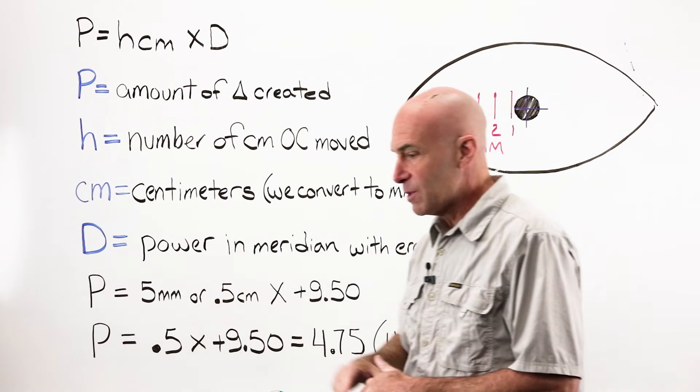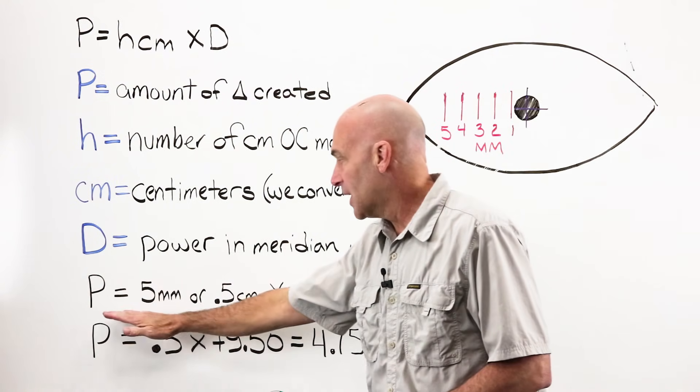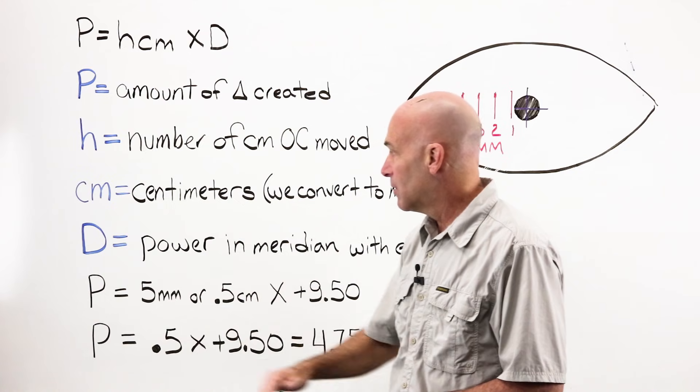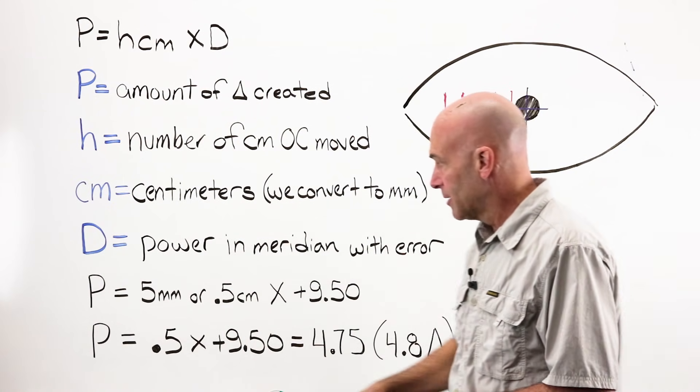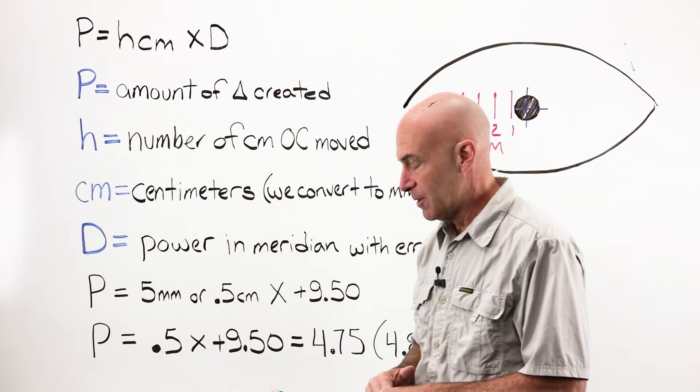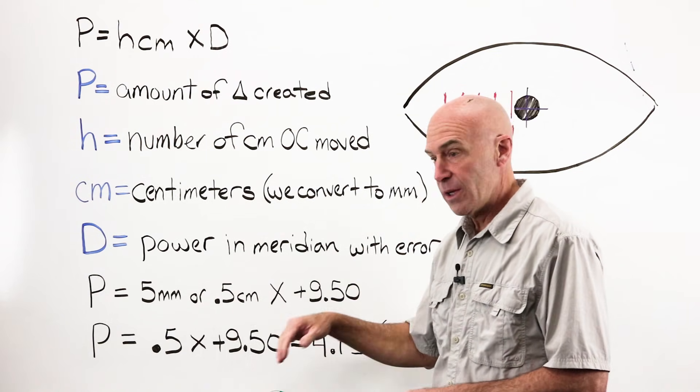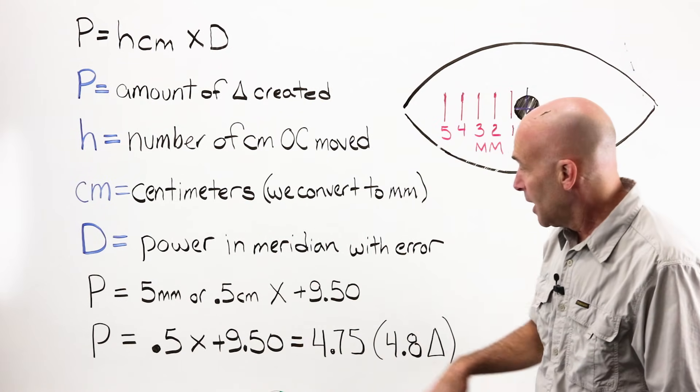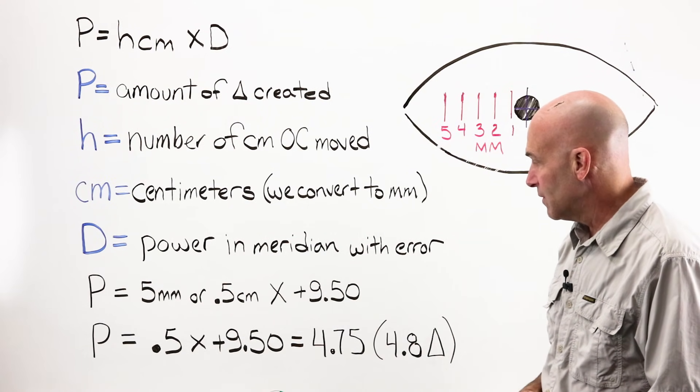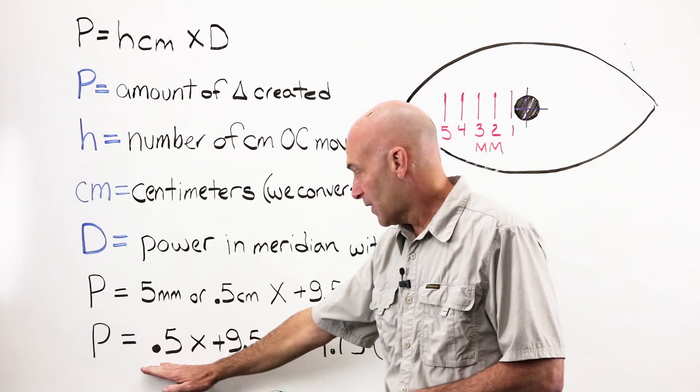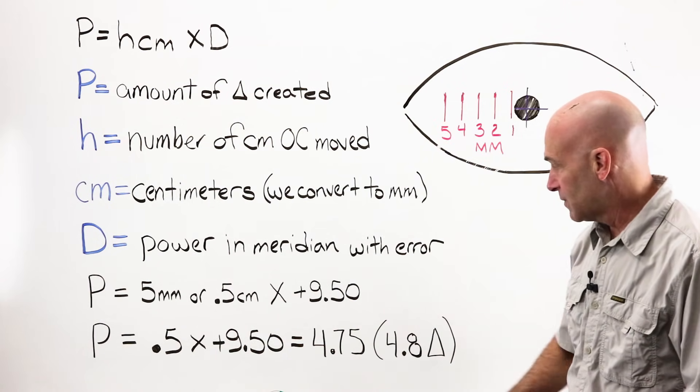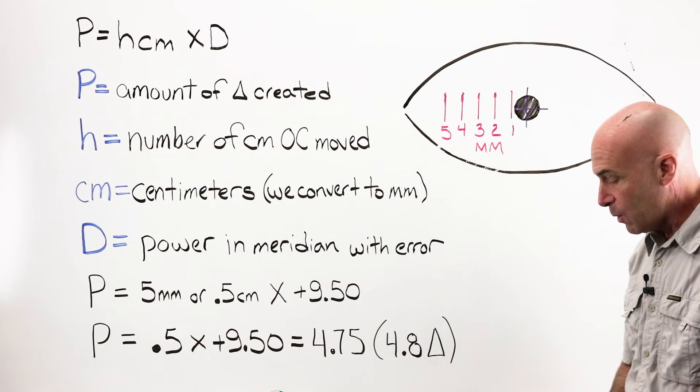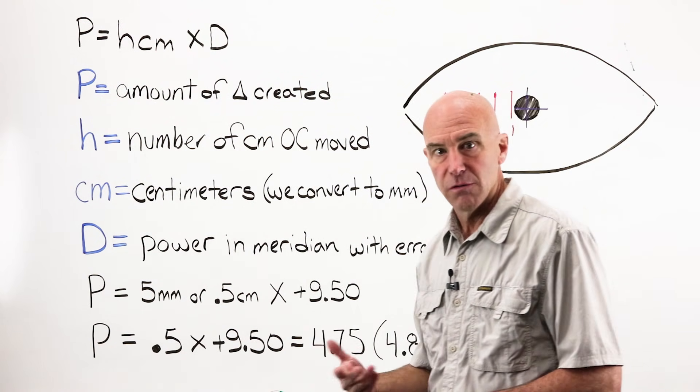So a typical Prentice's Formula problem may break down something along very similar lines. If I had an error in a PD along the 0, 180 line of five millimeters or .5 centimeters, I would divide it by 10 in order to convert. And I had a power of 9.50. I would have my .5 times my 9.50 for a total of 4.75, rounded for a total of 4.8 diopters of error.